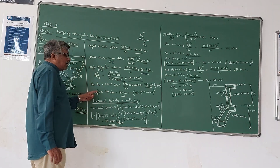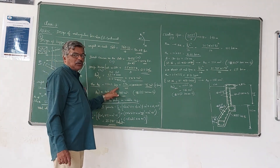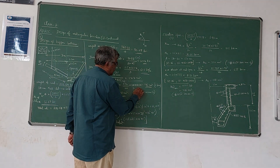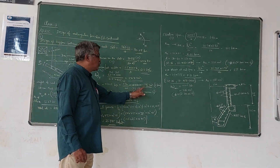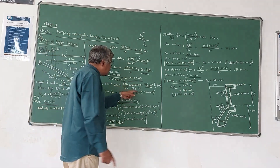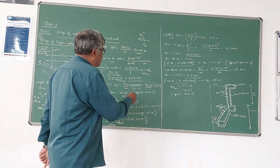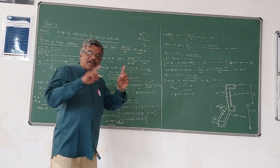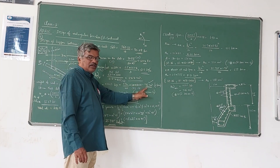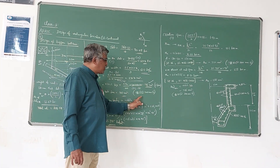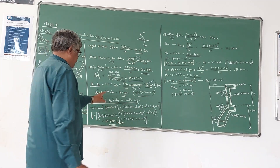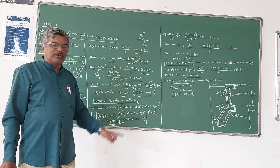We have to check for minimum steel, which is 0.12% of B times D, where B is 1000 mm and D is 180 mm (the assumed thickness). This comes out to 216 mm². We observe that the minimum steel required is more than whatever is obtained from the direct tension calculation. Therefore we have to provide the minimum. Since the normal reinforcement is required in two layers, the steel in each layer will be half of 216, which is 108 mm². So if you provide 8 mm bars at 300 mm centre to centre, that will satisfy the 108 mm² requirement.